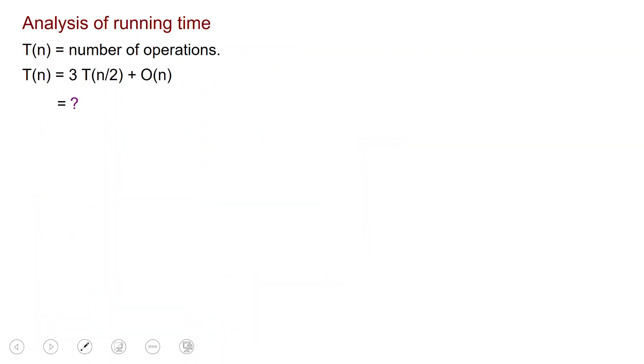Now we have to analyze the running time. Let's call T(n) the number of operations. And we see from the algorithm that to multiply two integers of n digits, we reduce to performing three multiplications between integers with n over 2 digits, plus there is a bunch of additions which cost linear time, order of n.